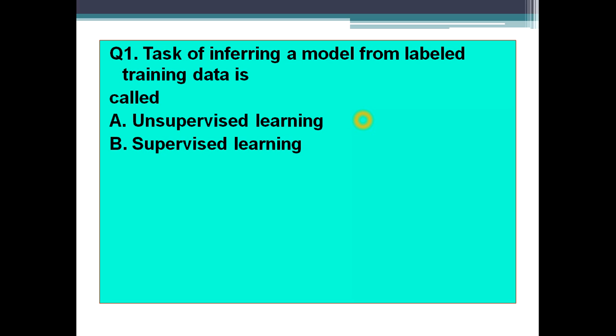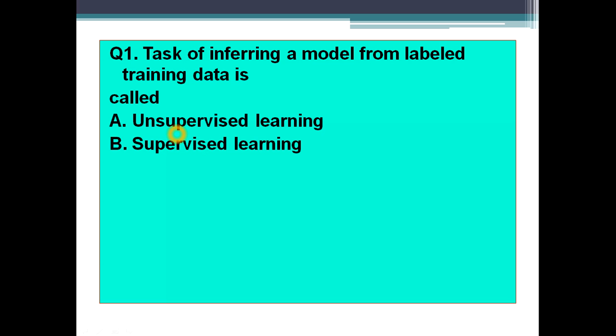You will even find these questions asked in interviews. The answer is Option B — supervised learning. When we say supervised learning, there is a supervisor, meaning we have knowledge about the dataset. That knowledge is possible when we have labeled data. So in supervised learning, we have labeled training data.